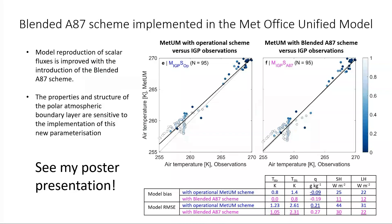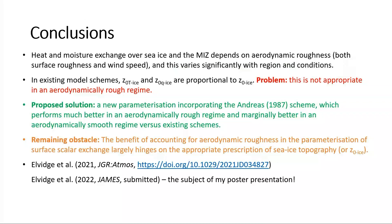We've recently implemented this blended A87 scheme into the Met Office Unified Model and run sensitivity experiments to test its performance for the period of the IGP field campaign. Essentially what we find is that the new scheme performs much better than the current operational scheme, and that it has a marked impact on the evolution of the boundary layer downwind of sea ice. These results are the subject of a new paper we've recently submitted, and also my poster presentation at this conference — I invite you to seek out my poster for more details.